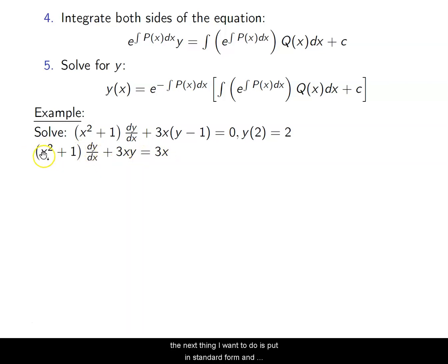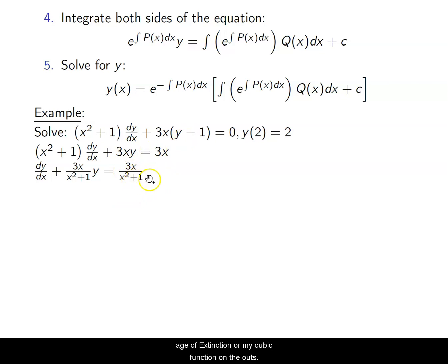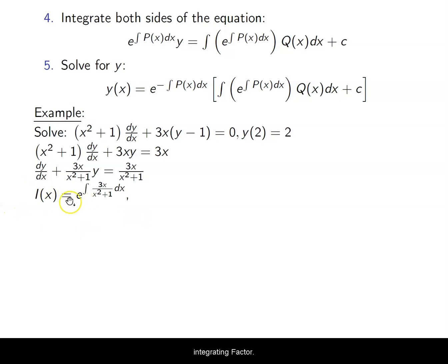It's not in standard form yet, but it is in the form of a linear equation. So next I divide everything by (X² + 1) to put it in standard form. Now I have my derivative isolated, with (3X)/(X² + 1) times Y, and my Q(X) function on the right side. From here, I take this middle function and call it P(X), and then I can find my integrating factor.